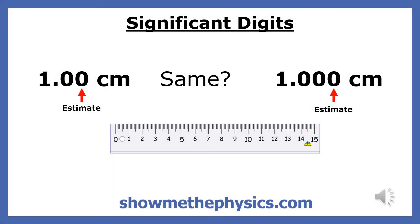Are the two measurements shown here the same? To a scientist, these numbers are numerically the same, but they were produced by two different measuring devices. The second measurement was taken with a measuring device that had much more accuracy. The way you report a number in physics communicates the accuracy of your measuring device.